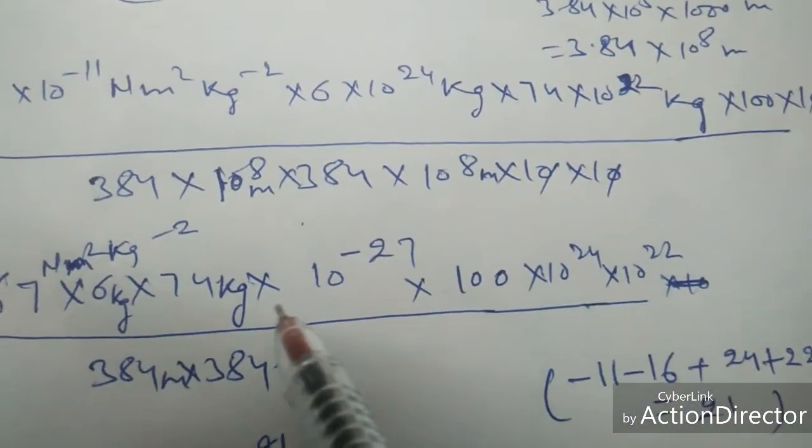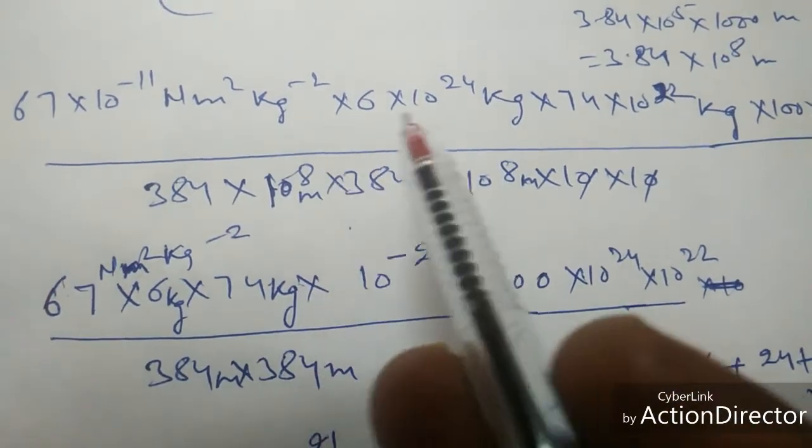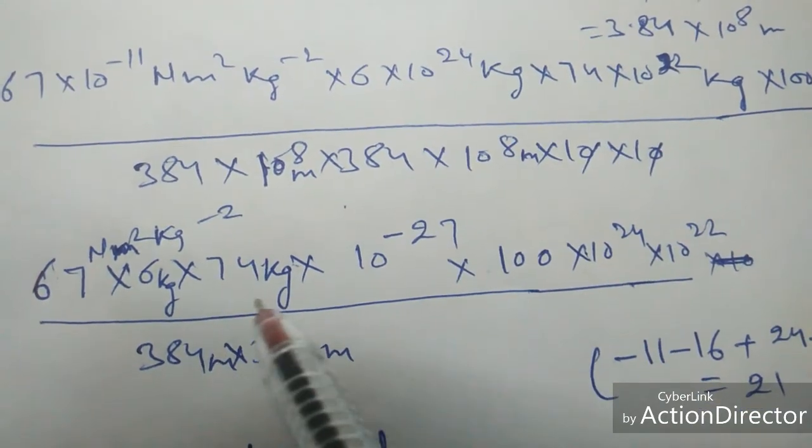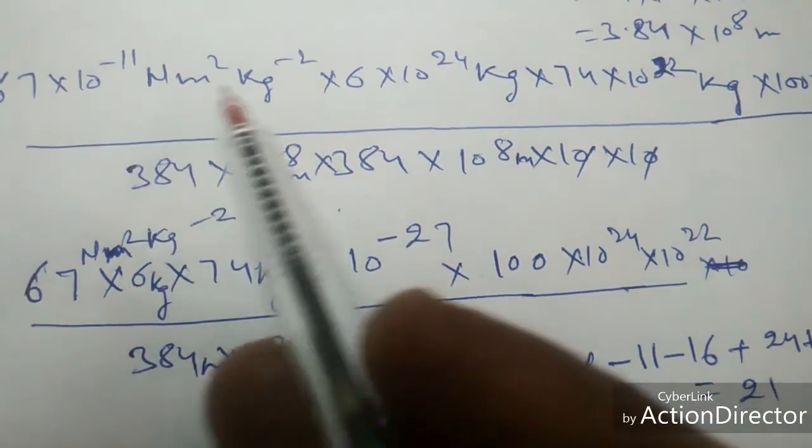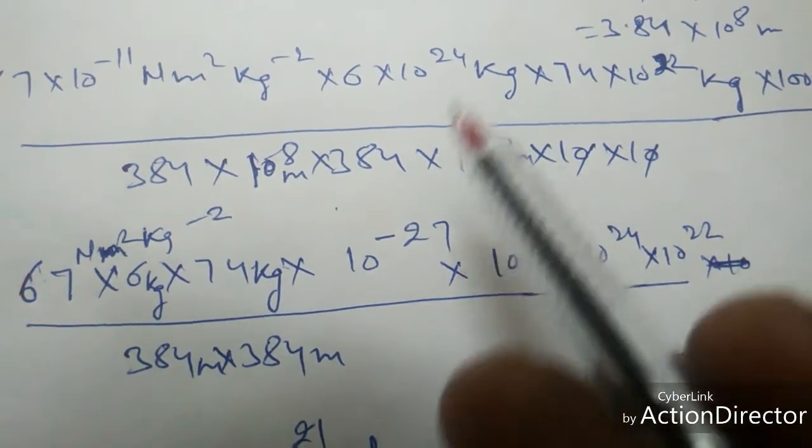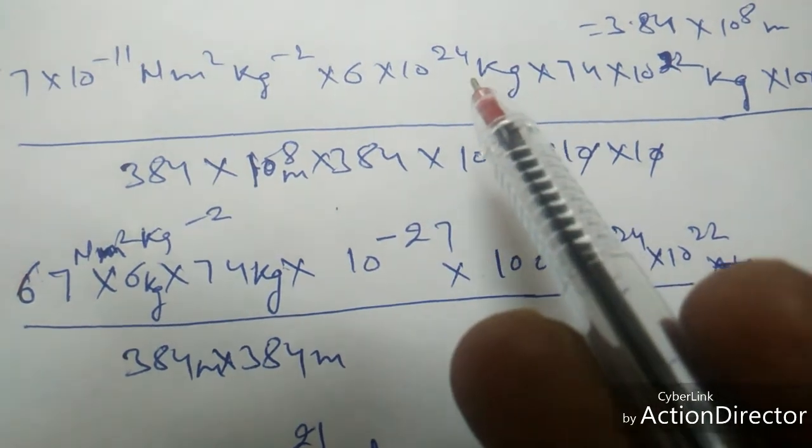Now we will calculate all the zeros. We have removed all the zeros. Now the remaining zeros we will calculate: there are -11 zeros, and 8, 8, 16 zeros. When they come up, they will be in the minus.